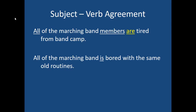If I say 'all the marching band is bored with the same old routines,' I get to use the verb 'is,' which is singular, because even though the subject is the word 'all,' in the prep phrase 'band' is singular, and the singular word 'band' makes 'all' singular, and therefore my verb is singular.